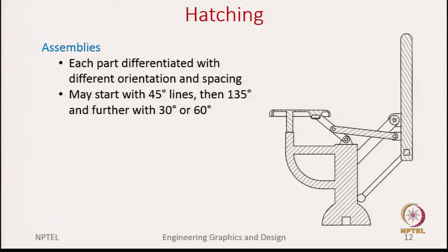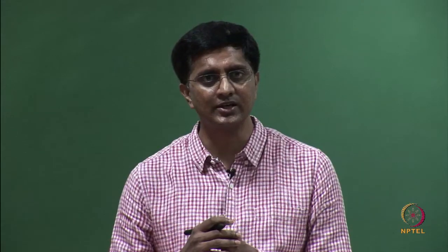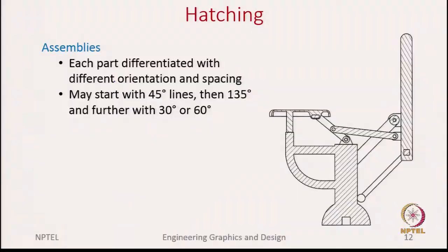First, each part needs to be differentiated using different hatching orientation and spacing. When we do the hatching for the sectioned areas, we need to keep a few principles in mind. We should be able to differentiate each part by using hatching of different orientation and spacing. Here is one guideline: we may start with 45-degree lines, then with 135-degree lines, and if there are even more parts we can choose other angles like 30 and 60 degrees.